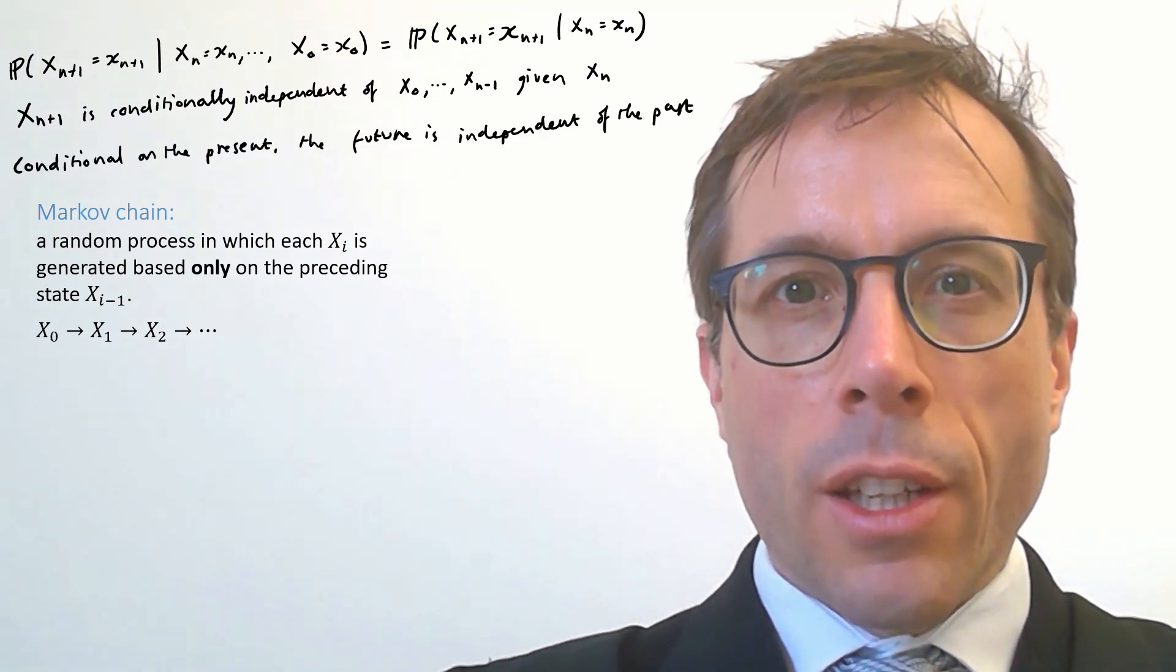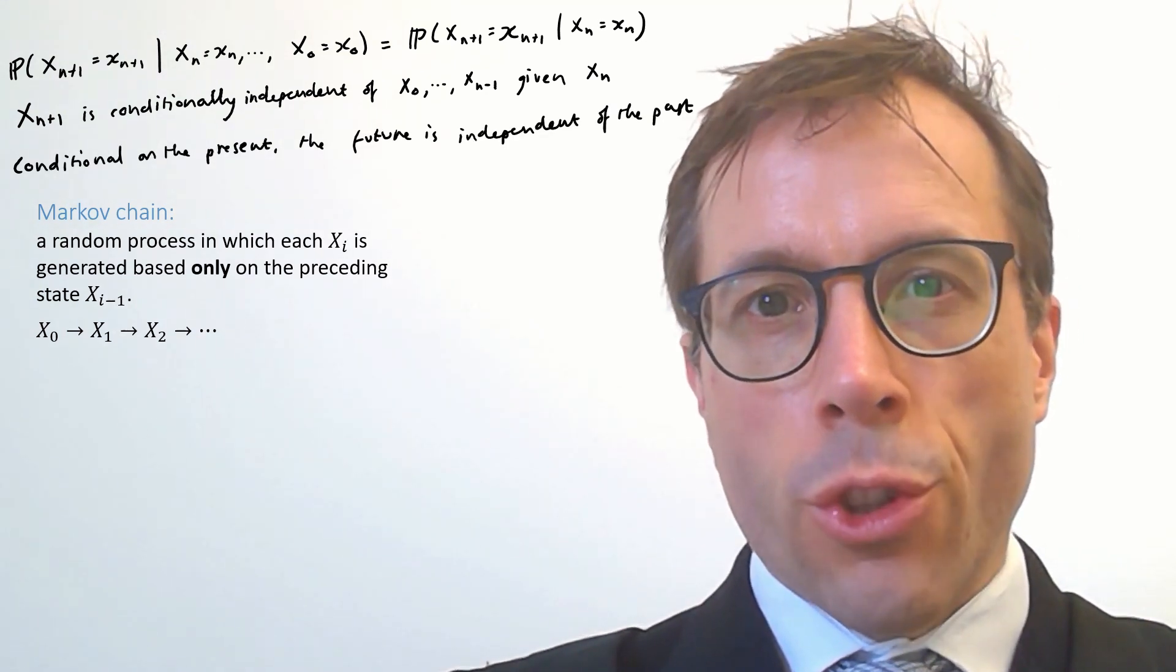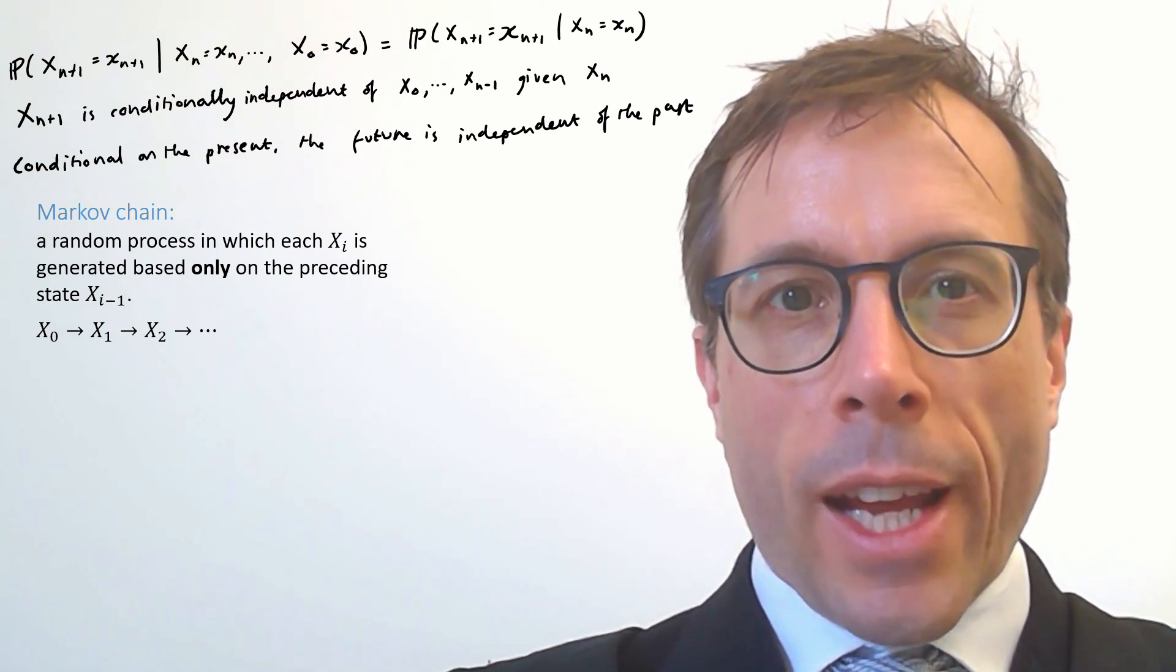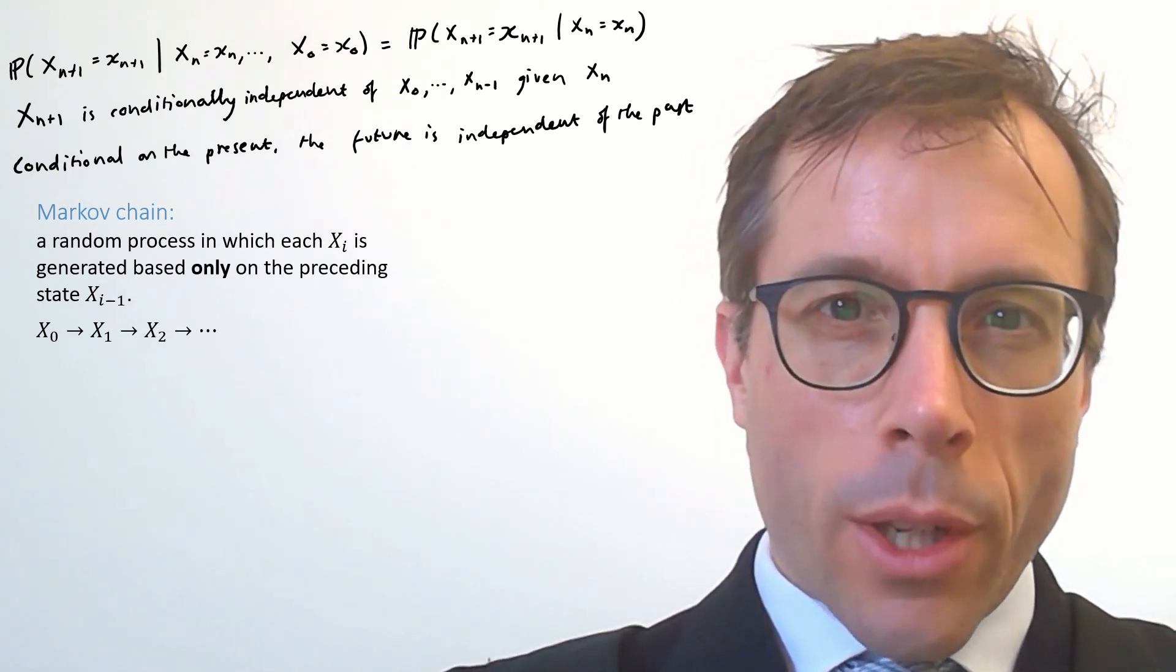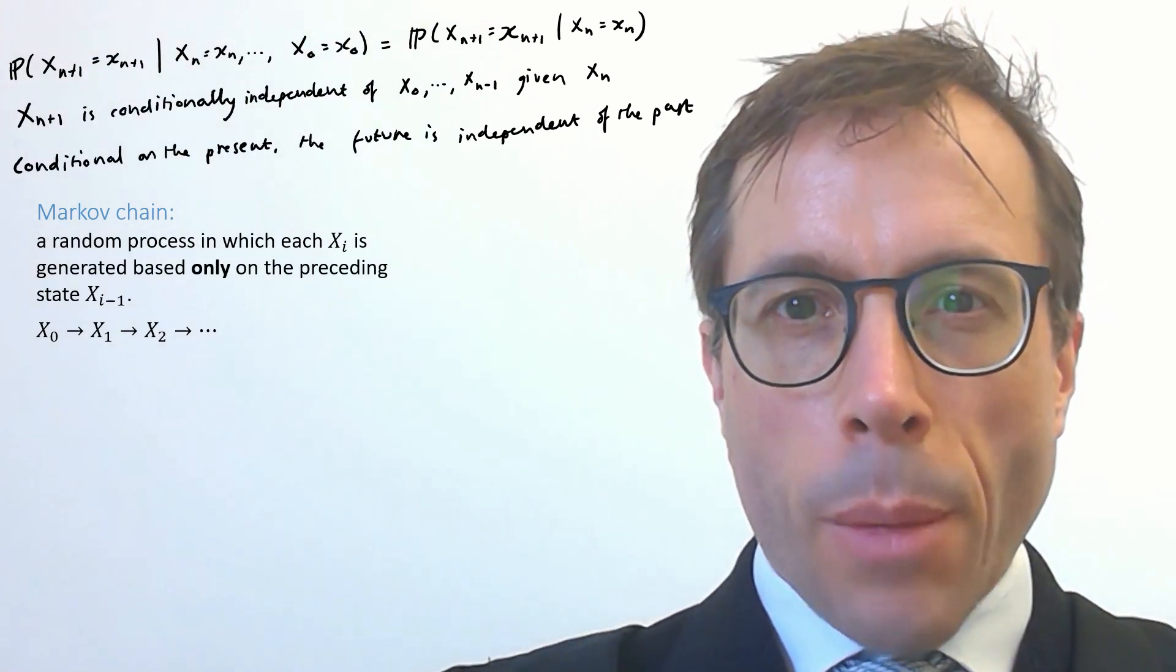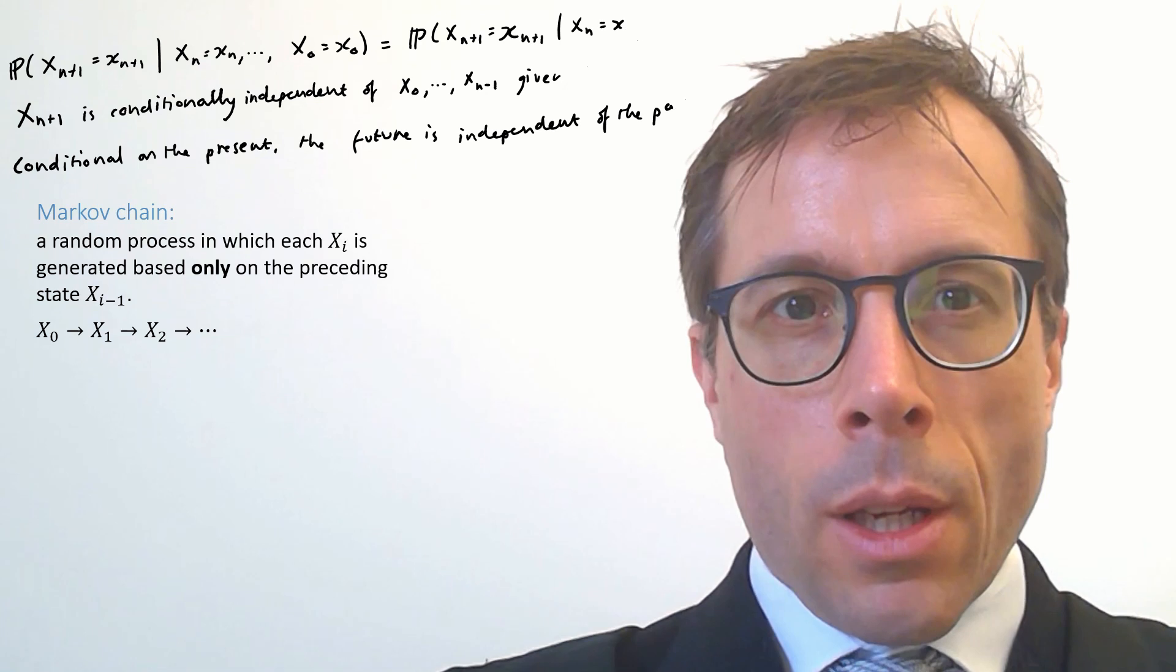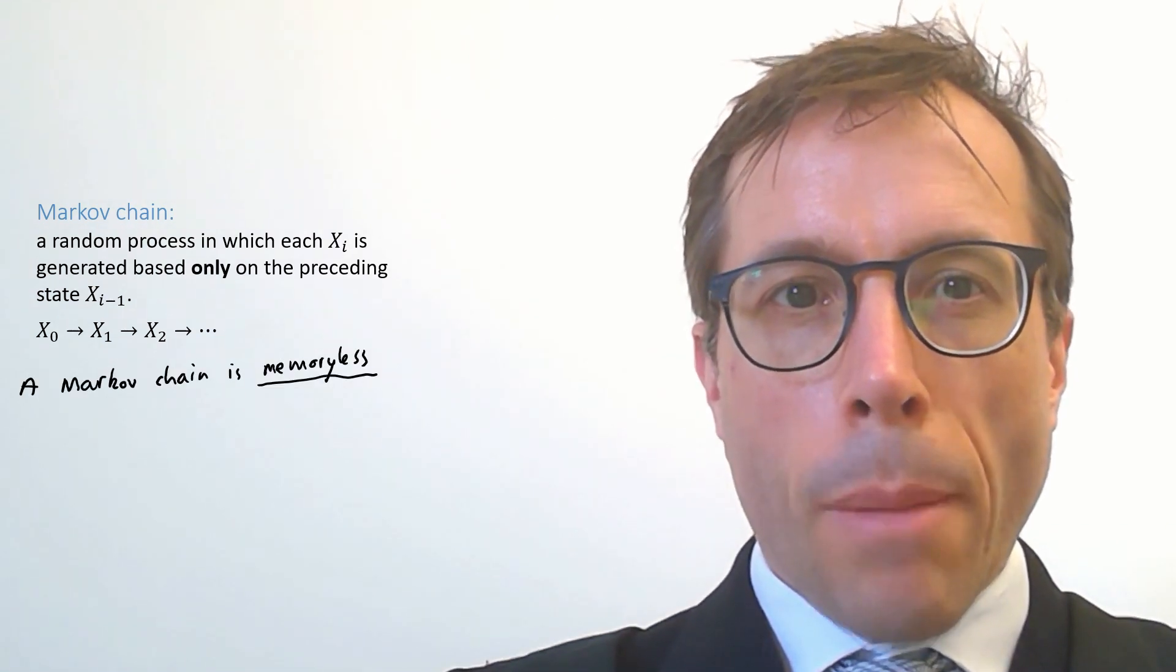Informally, we'd say conditional on the present, the future is independent of the past. Well, what we mean is xn is the present, x n plus 1 is the future, and everything from x n minus 1 and earlier is the past. This property is called memorylessness.